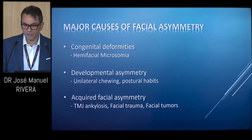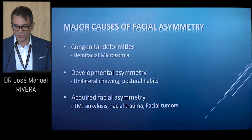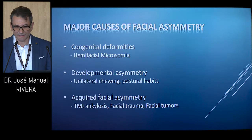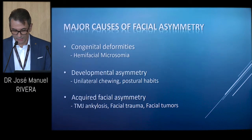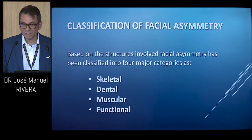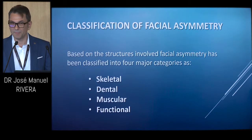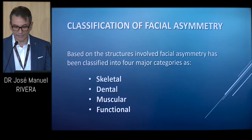The major causes of facial asymmetry are the following: congenital deformities such as hemifacial microsomia, developmental asymmetries such as unilateral chewing or postural habits, and acquired facial asymmetry such as TMJ ankylosis, facial trauma, and facial tumors. Based on the structures involved, facial asymmetry has been classified into four major categories: skeletal, dental, muscular, and functional.